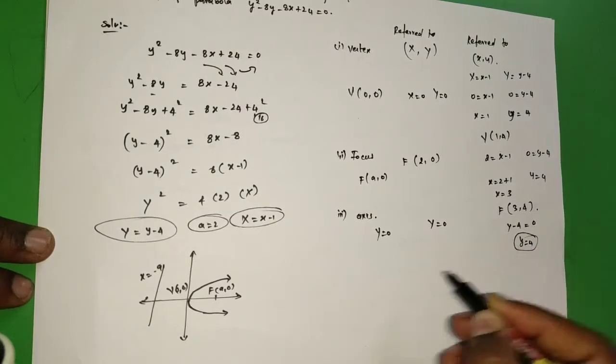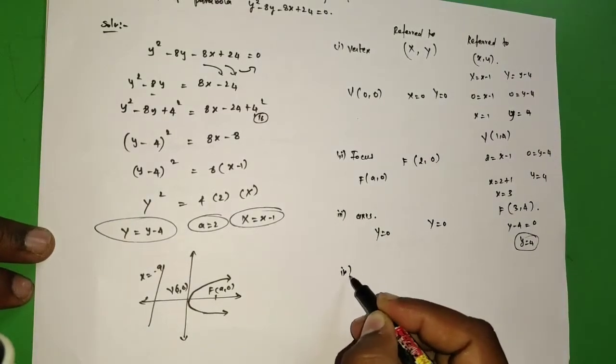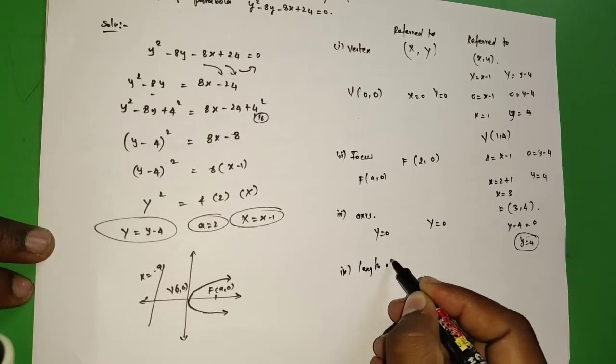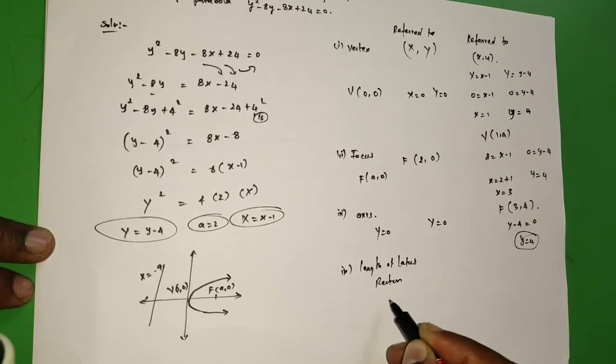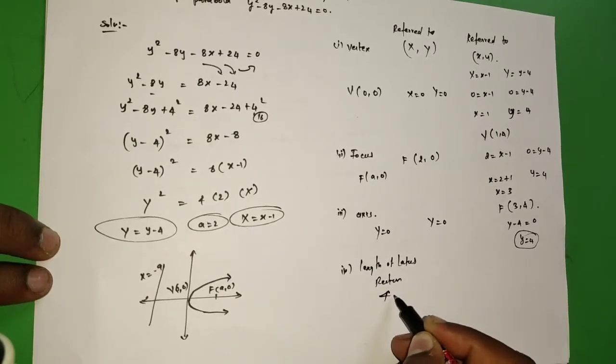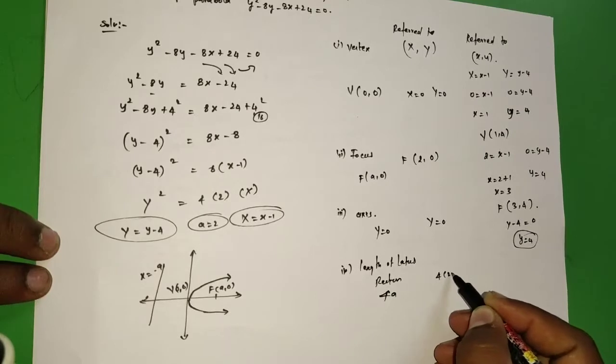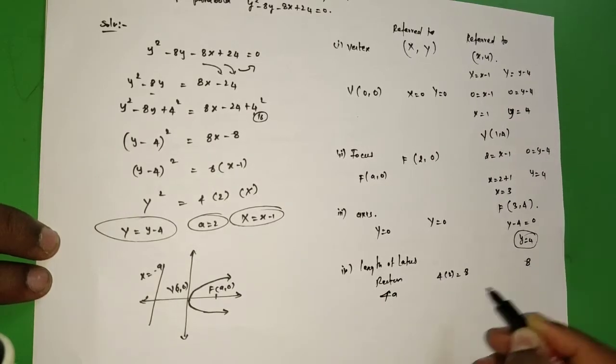Next, length of latus rectum. That is always 4a for all. Length of latus rectum is 4a, easiest one. The value of a is 2, so 4 × 2 = 8.